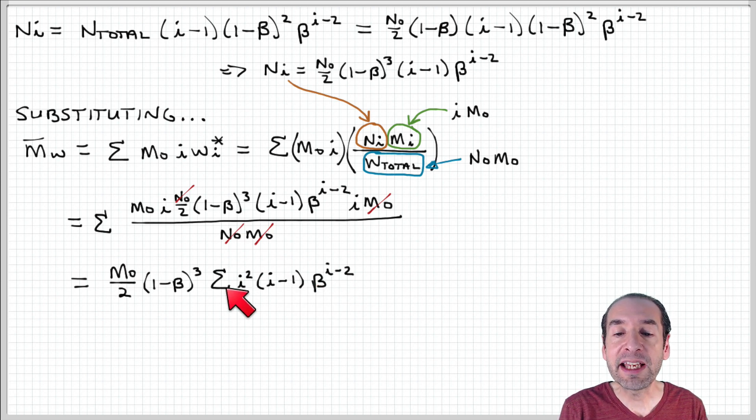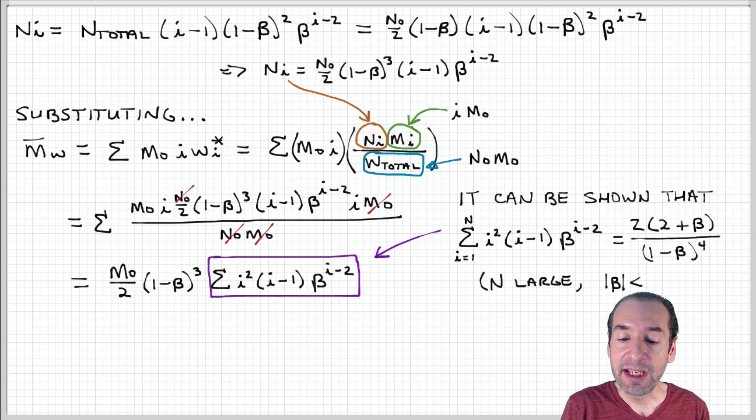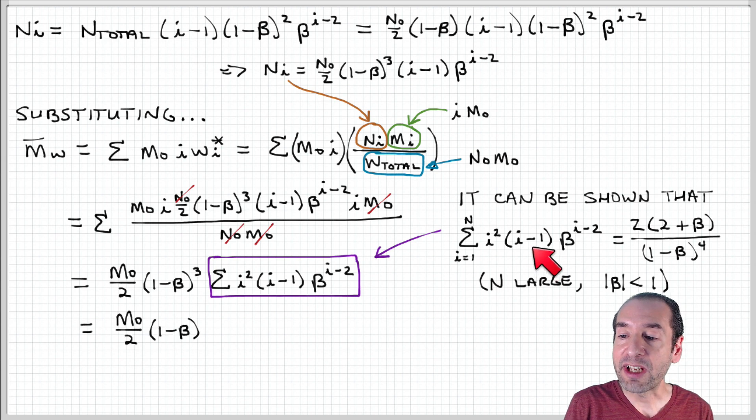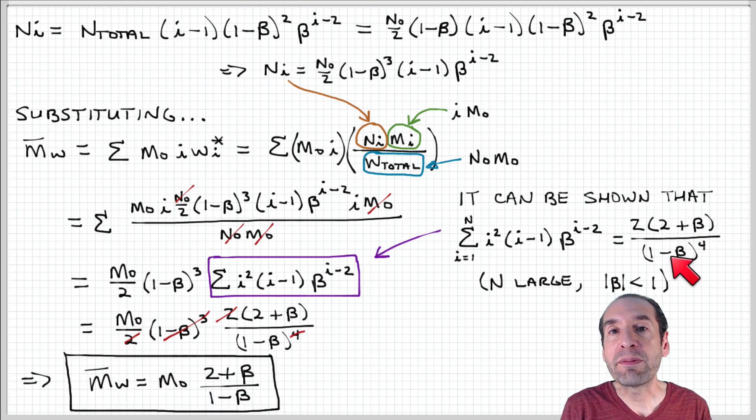Now you can probably guess that this summation is going to have a relationship where it converges to some finite expression in terms of beta, just as has been the case for the previous analysis we've done, and that turns out to be true. This summation, i squared times i minus 1 times beta to the i minus 2, converges to 2 times 2 plus beta over 1 minus beta to the 4th, with the usual caveats that we're talking about a large ensemble and the magnitude of beta is less than 1.